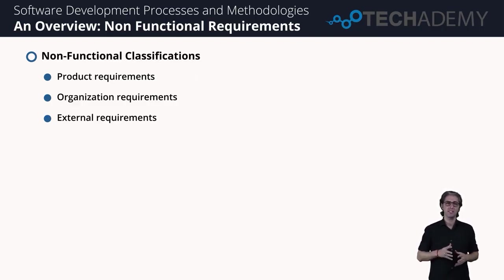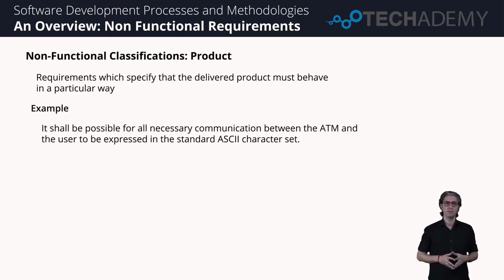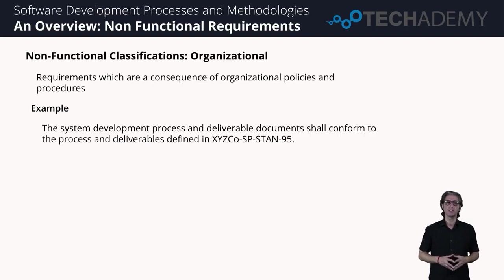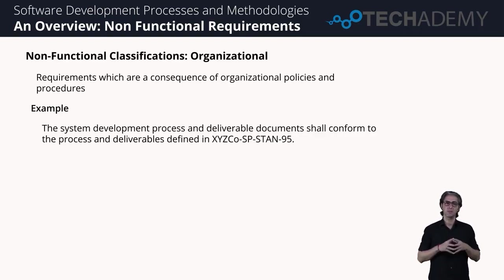Let's get a closer look at three classifications of non-functional requirements: product, organization, and then external. Product requirements are non-functional and talk about specific behavior — they are mostly in the form of protocol requirements, encryption requirements, or encodings. Organizational requirements are the ones defined by the company — company standards, code style requirements of the development team, the development process itself like using Scrum. Finally, the external constraints are a major factor, especially in industries that are actually regulated.